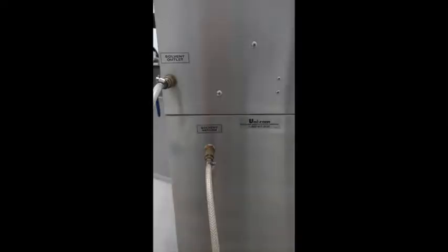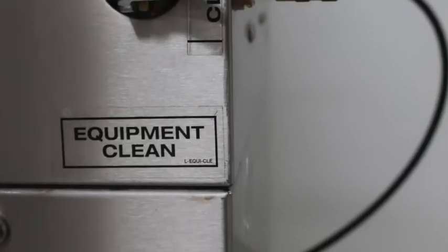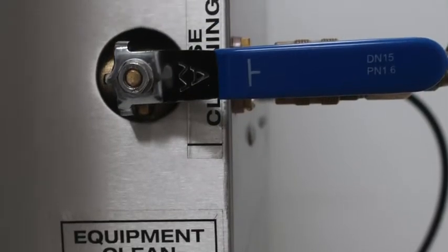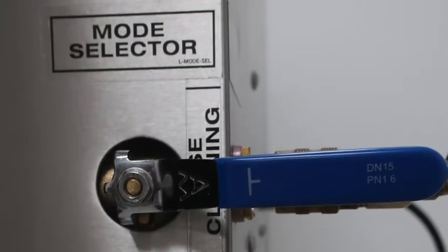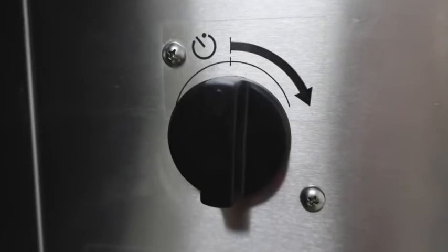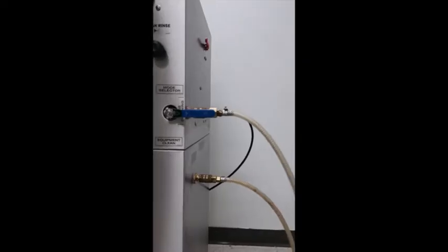Connect your hose to the side of the machine using the appropriate fittings. Using the mode selector lever, switch the machine from equipment clean to hose cleaning. Set the wash timer for another full cycle to automatically clean your hoses.